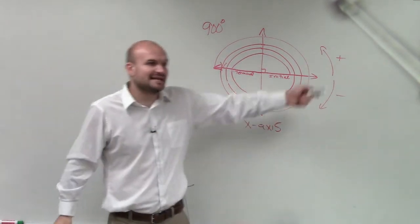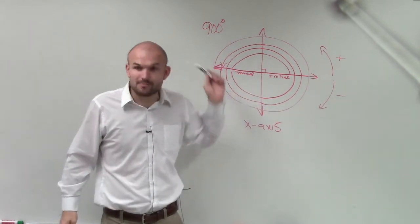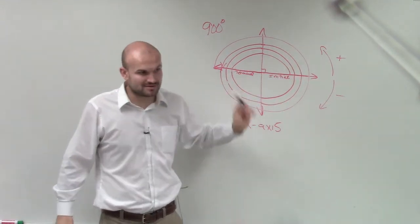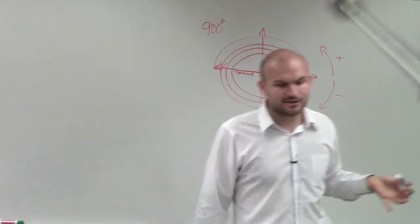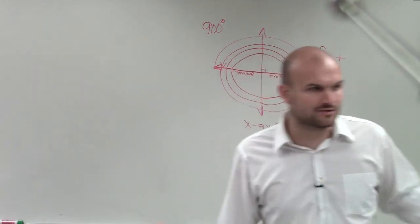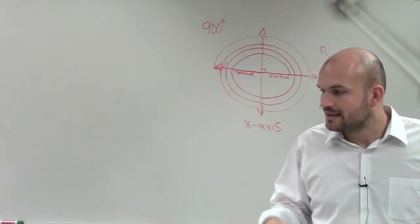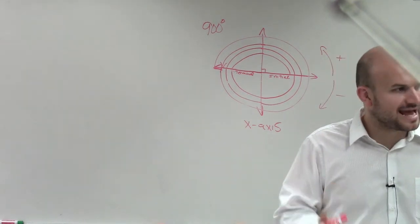But if I keep on adding 360, I'm just getting bigger and bigger numbers, right? I'm just getting bigger and bigger angles. So what the question asks on your test is find two coterminal angles, the smallest positive and smallest negative.